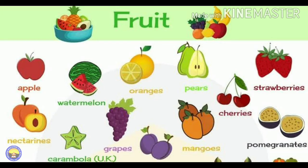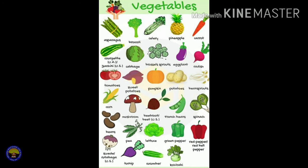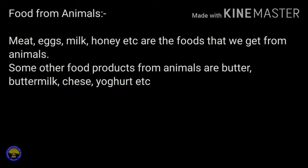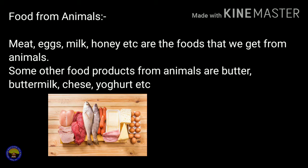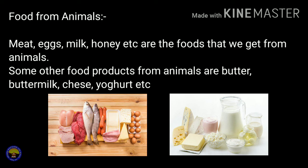You can see various examples of fruits and vegetables in the following pictures. Next, another source of food is food from animals. Meat, egg, milk, and honey are foods that we get from animals. Some other animal products are butter, buttermilk, cheese, yogurt, etc. Students, you can see examples of food that we get from animals in the pictures.